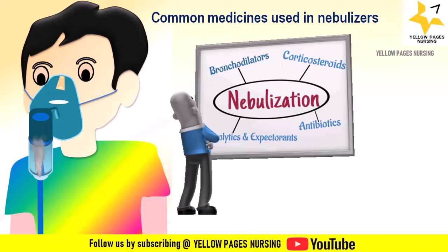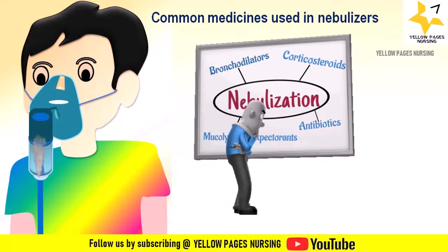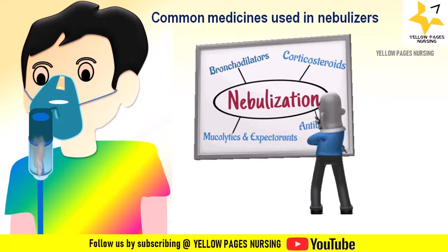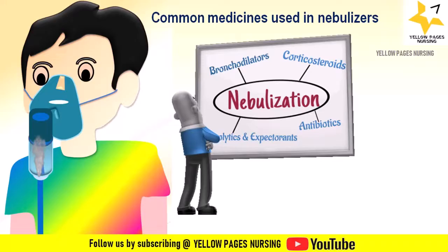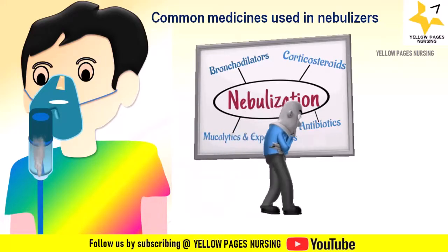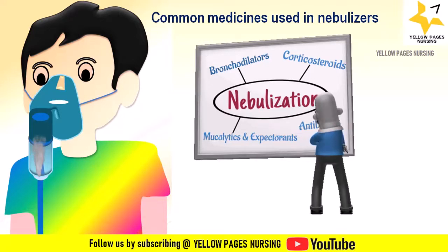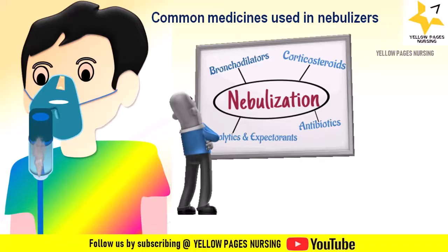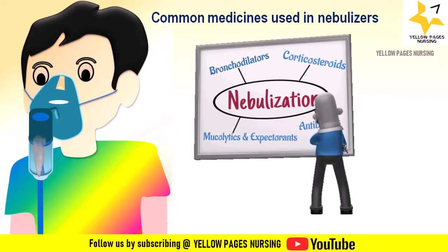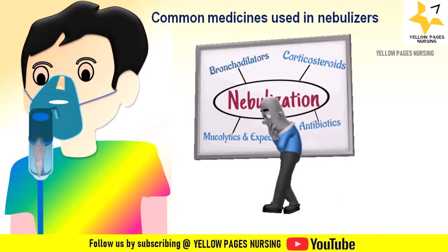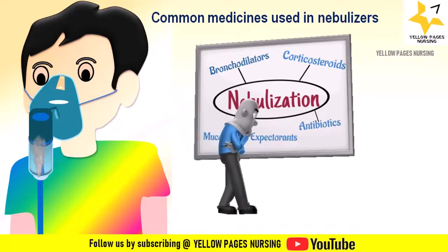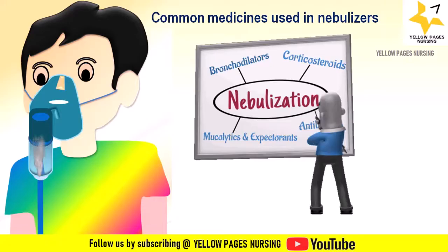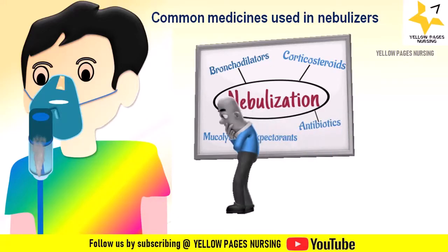Corticosteroids are used to reduce inflammation of the upper airway. Next are mucolytics and expectorants — a group of medications that work by thinning and loosening mucus in the airways, helping to clear chest congestion. Common expectorants include guaifenesin and ammonium chloride combined with diphenhydramine. Common mucolytics include acetylcysteine, bromhexine, ambroxol, and carbocysteine. Normal saline 0.9% and 3% are also commonly used for nebulization.